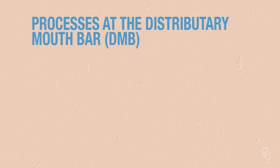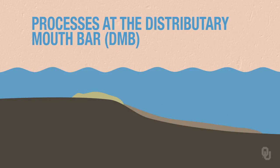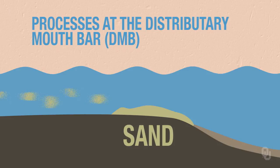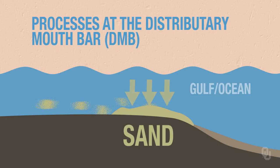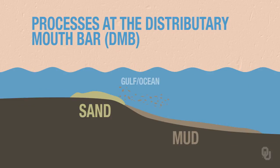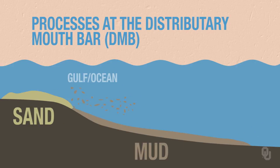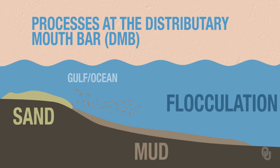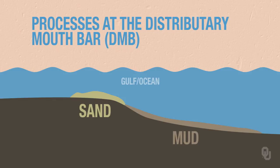There are some very important processes that operate at the distributary mouth bar and out into the pro-delta. One of the most important is the segregation of sand from mud. The sand is carried in the river, and when it gets to the gulf or ocean, velocity slows down. You deposit the sand — principally the bed load — and that's where you form the distributary mouth bar. But the mud is carried out into the ocean, goes into salt water, and a process called flocculation causes the clay particles to clump together and be deposited. So as a result, you have sand near the shoreline, but farther out you have lots of mud.